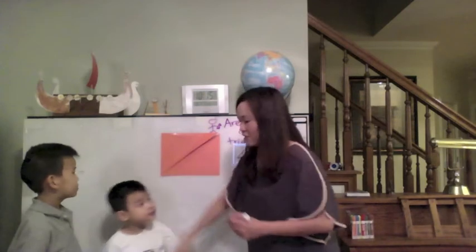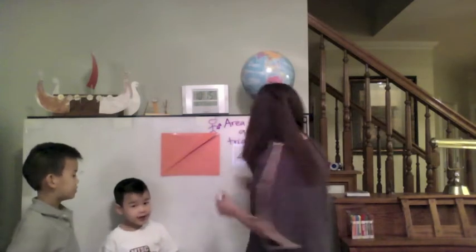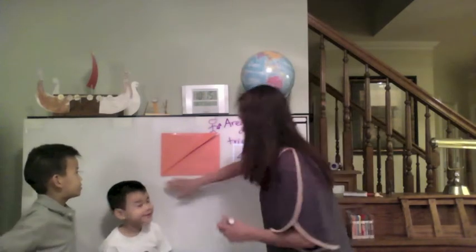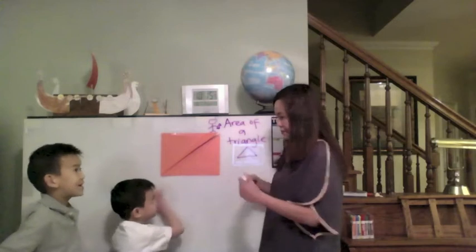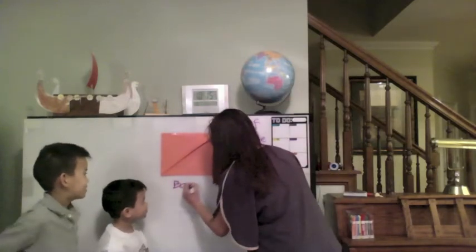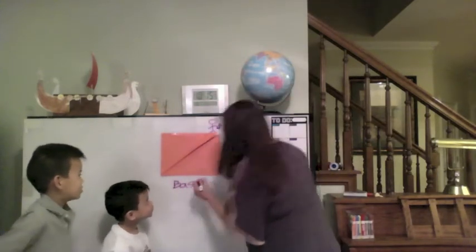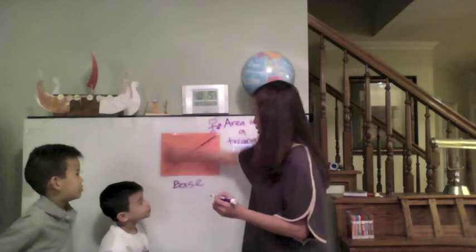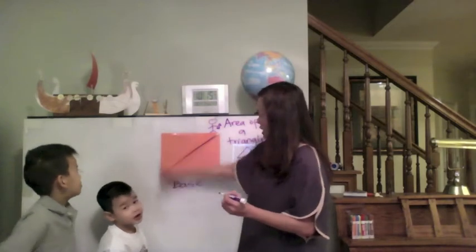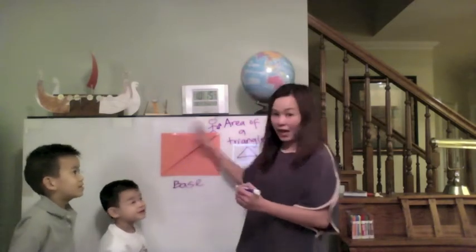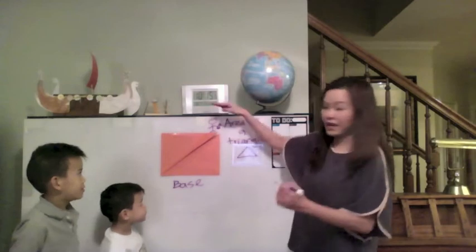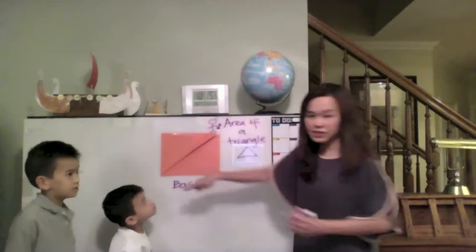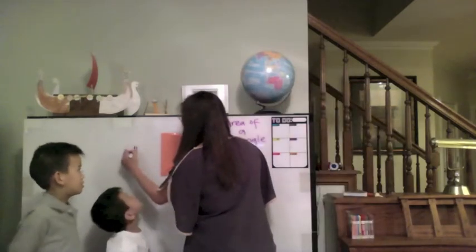Joshua, can I have that pen, please? Thank you. So what do you call this bottom part? The base. The base — that's a good word for that. Base. And then the side of it we call the height, because he's very high up because he's trying to skate down. So height.